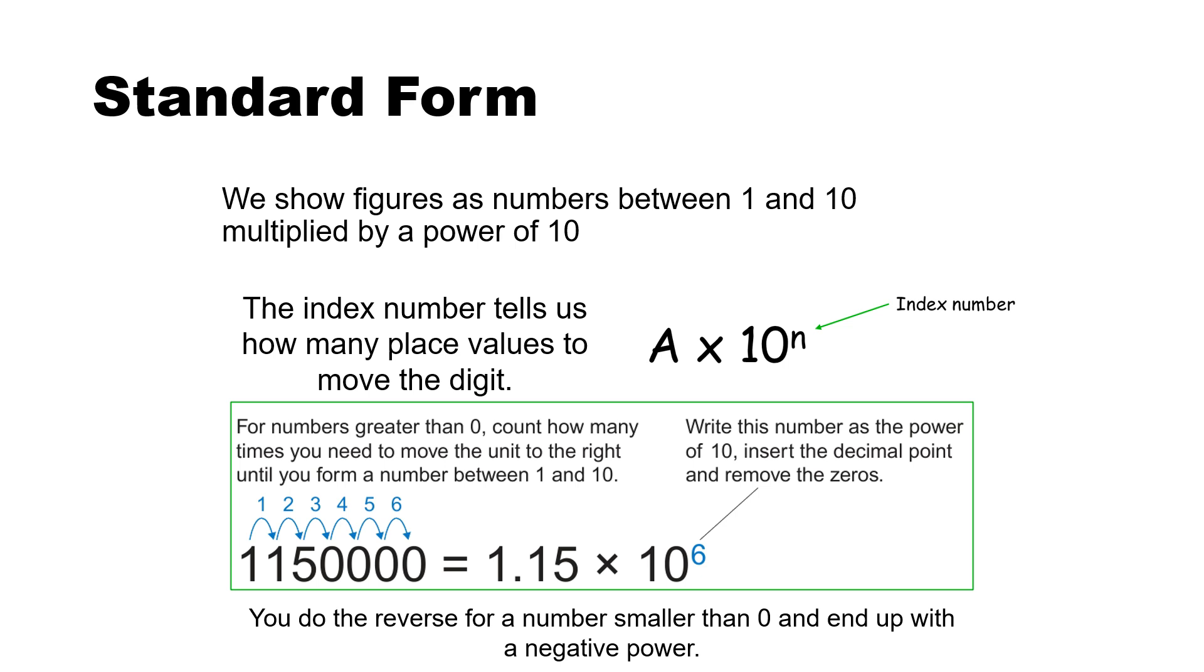Standard form. Yes, you might have to show things in standard form. So we show figures as numbers between 1 and 10 multiplied by a power of 10. So the index number tells us how many place values to move the digits. So in this case, 1.15 times 10 to the 6. So that is 6 movements to make 1.15 times 10 to the 6. And I'll be honest, most of the time they are reverse numbers. So if it's a smaller number, then it's usually 1.15 times 10 to the minus 6. So that would be the other way around, less than 1.